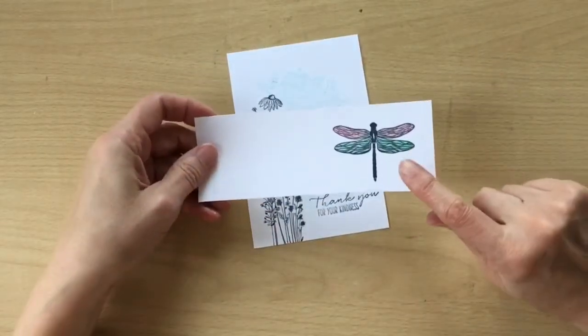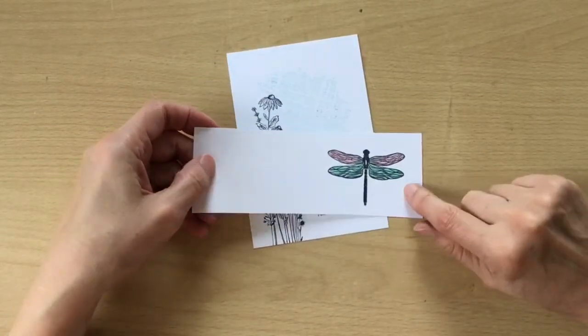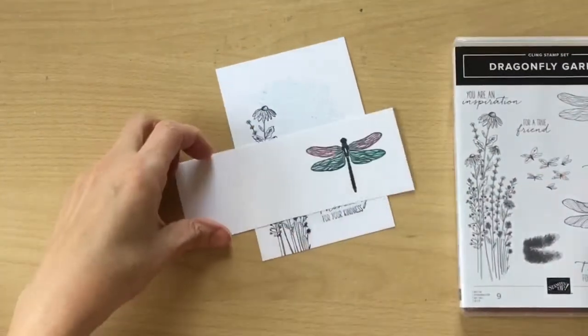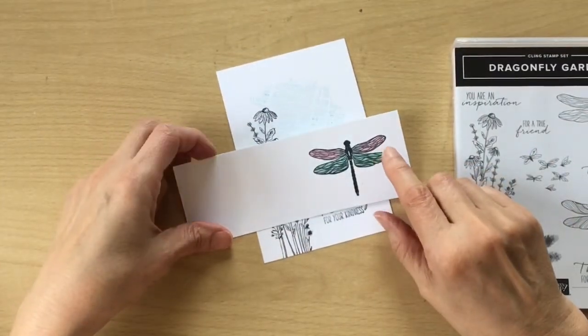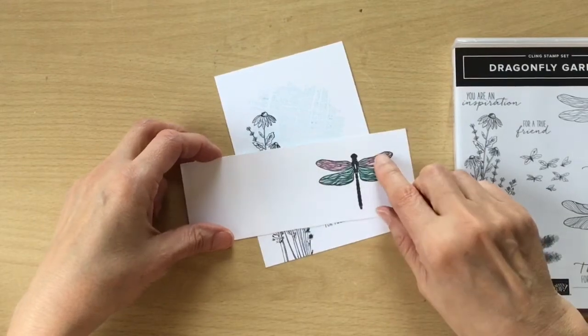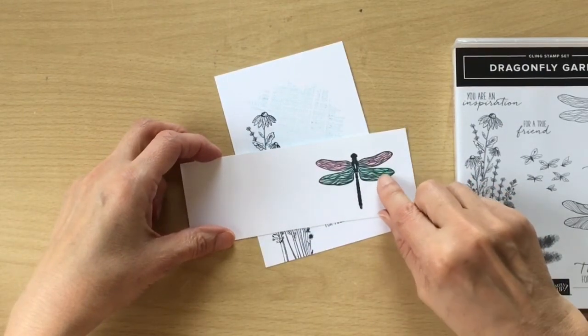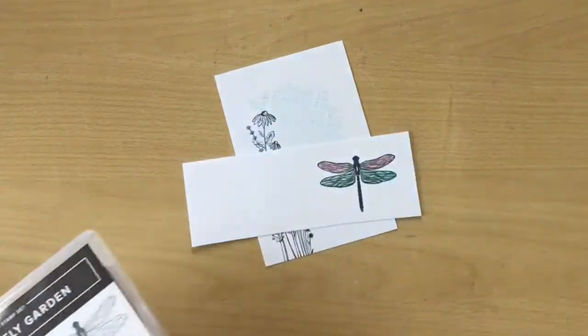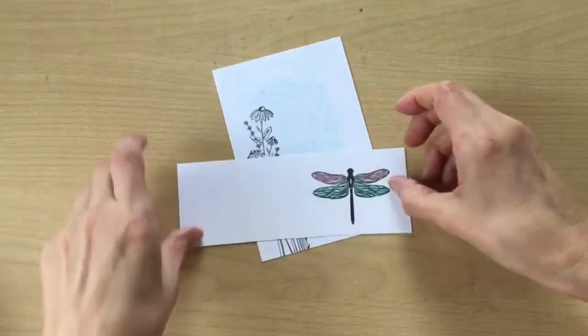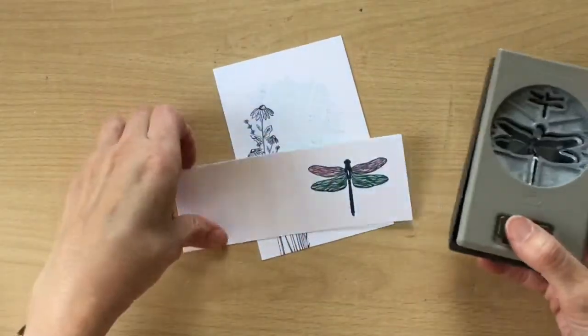So off camera I have stamped one of the dragonfly images. I've gone for the top one and I've colored it in and I've just used Flirty Flamingo and Pool Party. Just basic coloring and I'm going to punch this out.